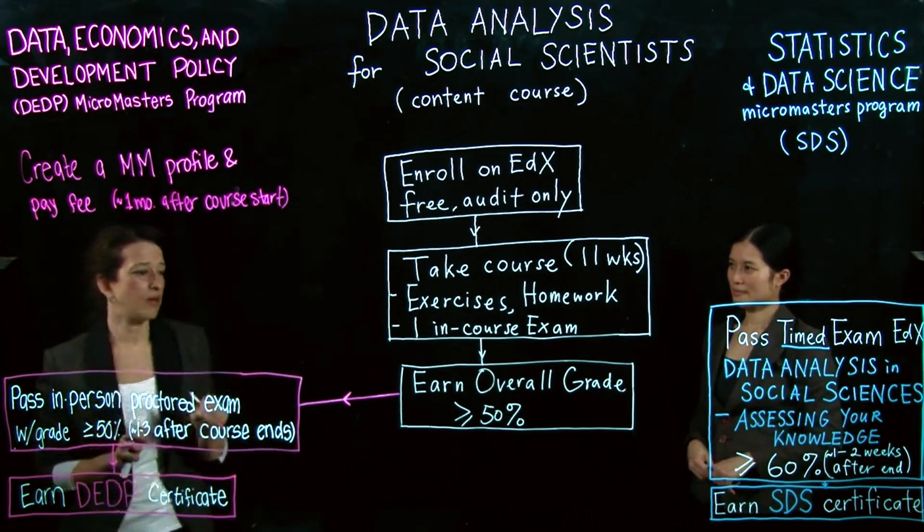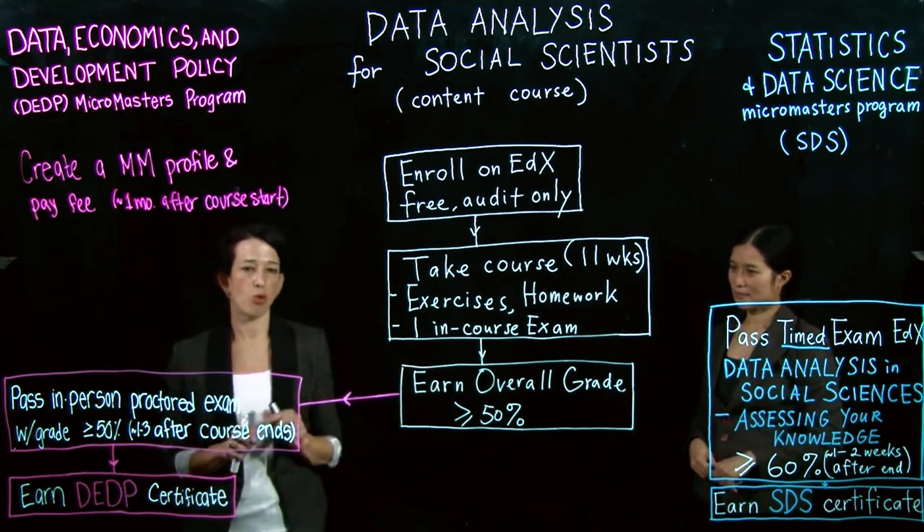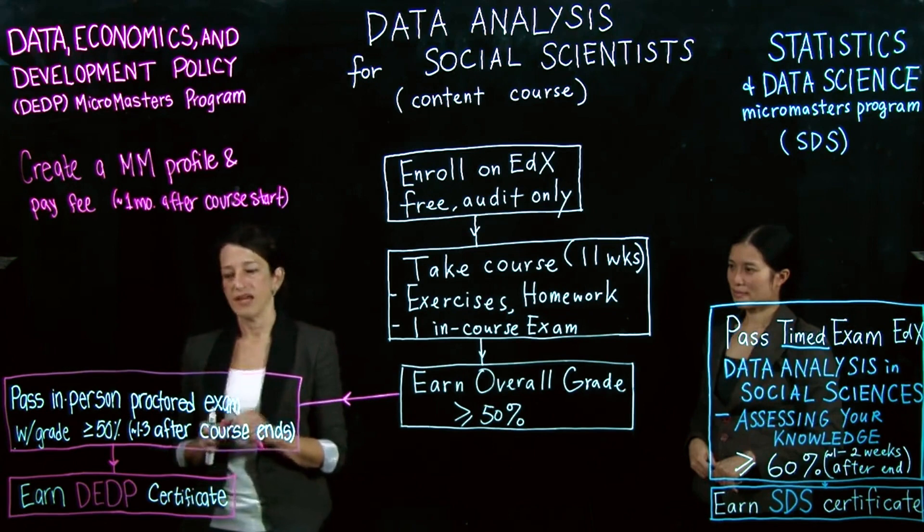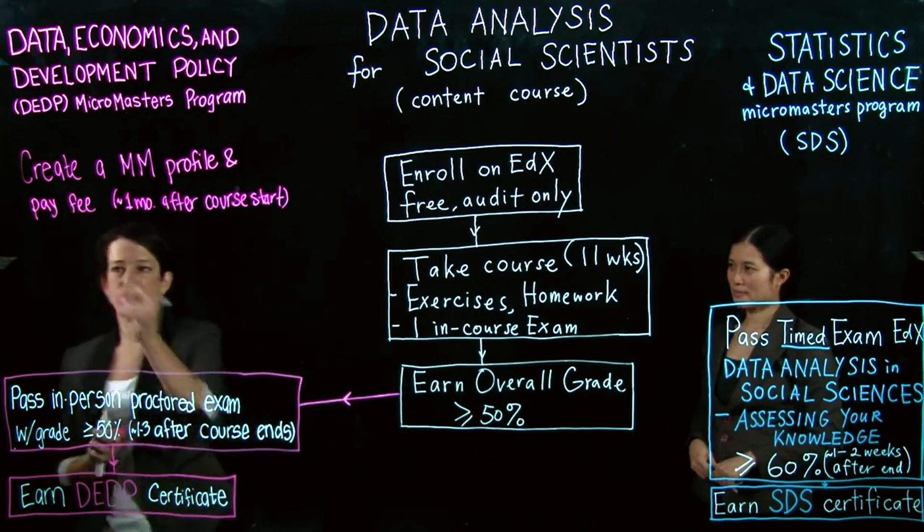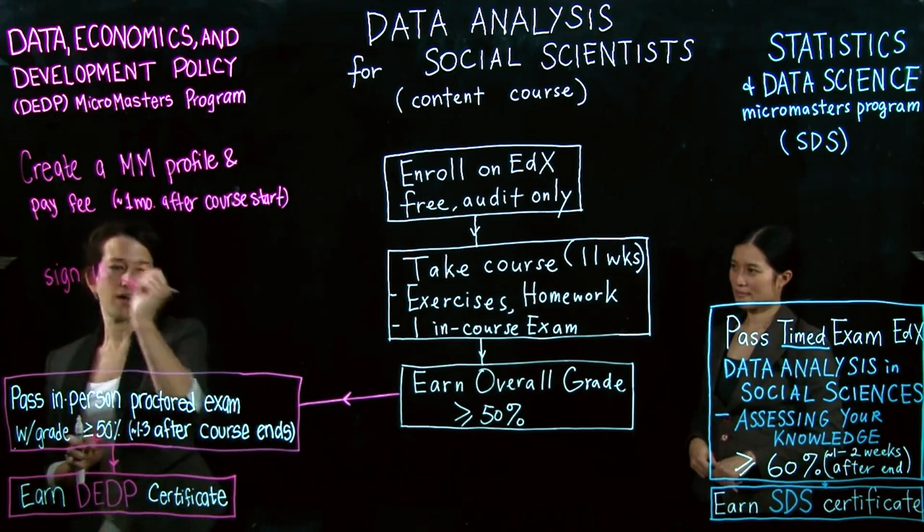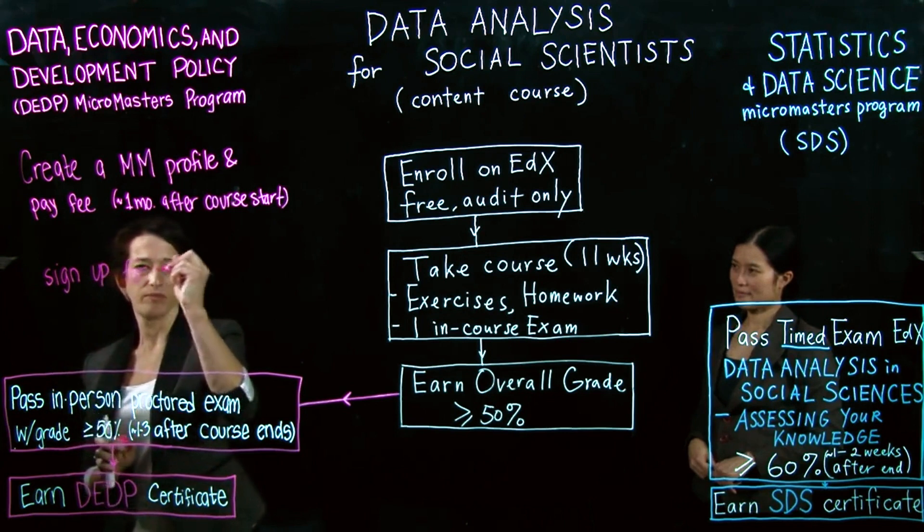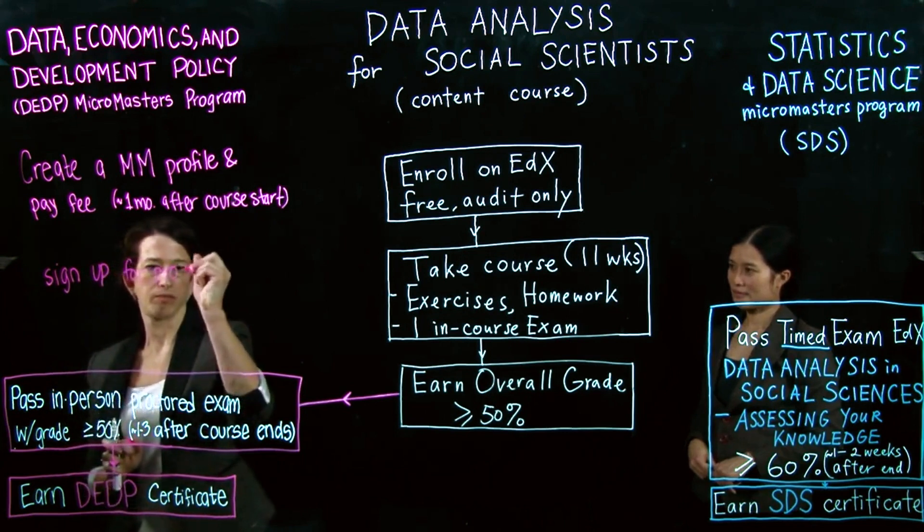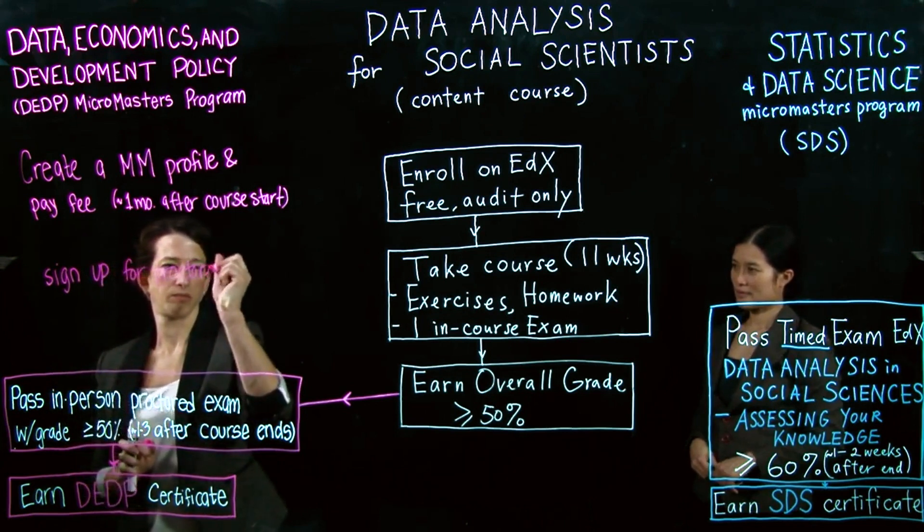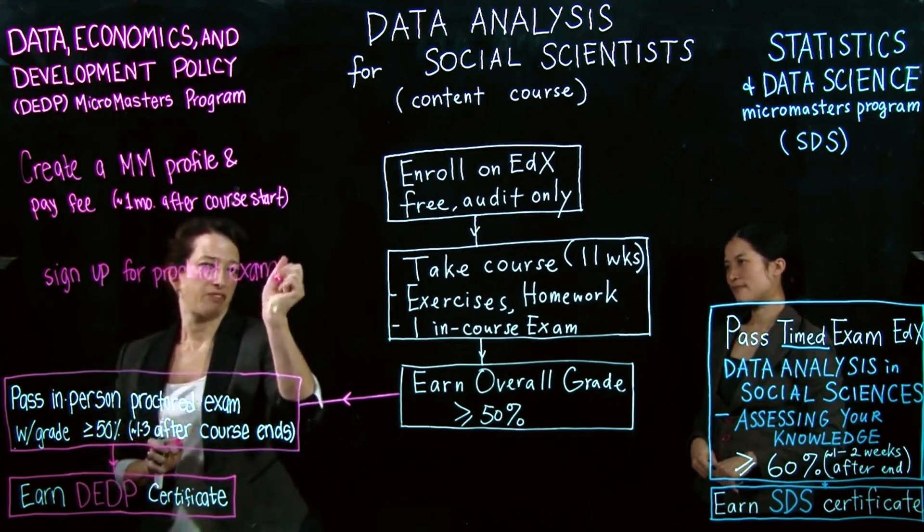The next step you'll need to do, conditional on having earned a grade of 50% or more in the content course, is to sign up for that in-person proctored exam. Only learners who are eligible will be able to do so. You'll be able to do this immediately after the course ends.